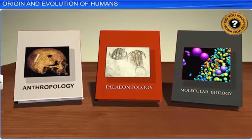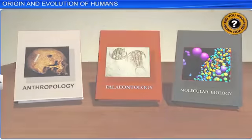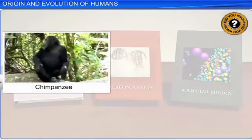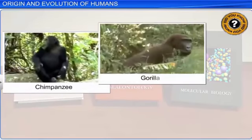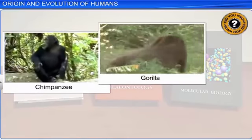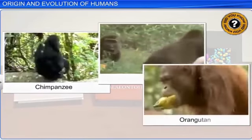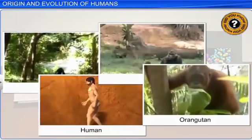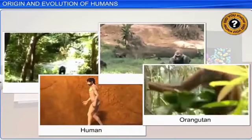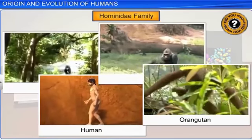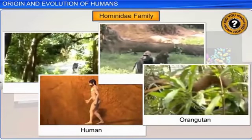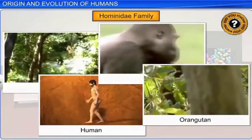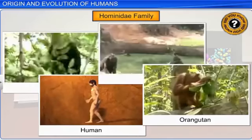Did you know that scientists have grouped chimpanzees, gorillas, orangutans, and human beings as four member species of the hominidae family? Let us trace the evolution of human beings through the ages.